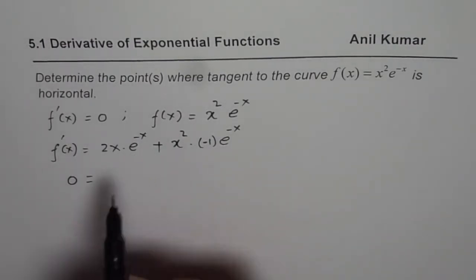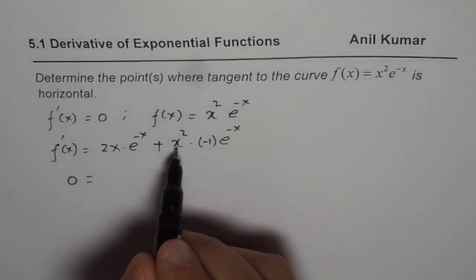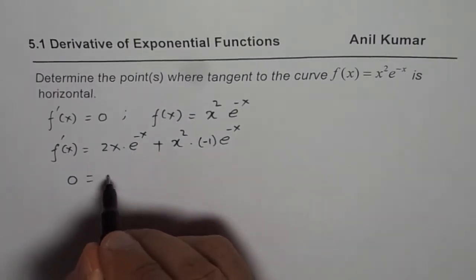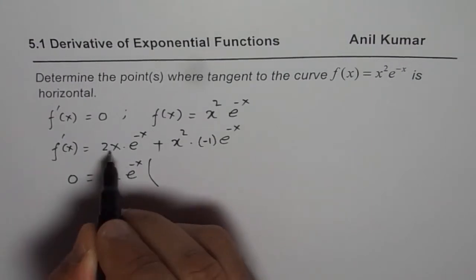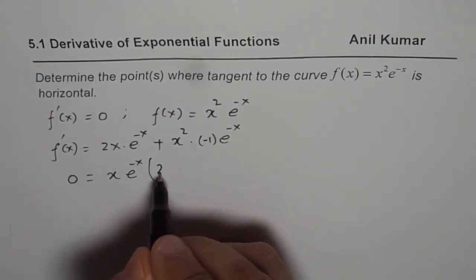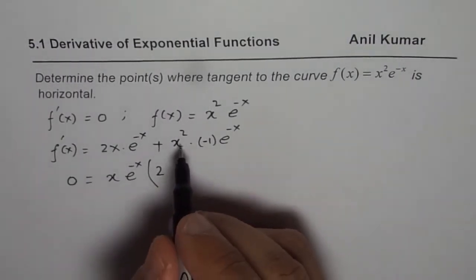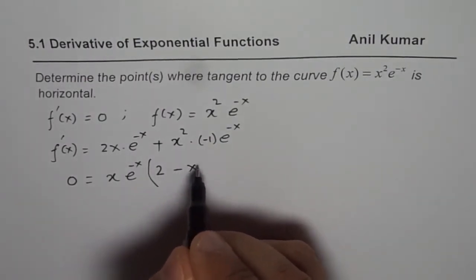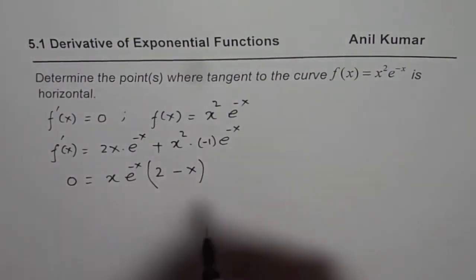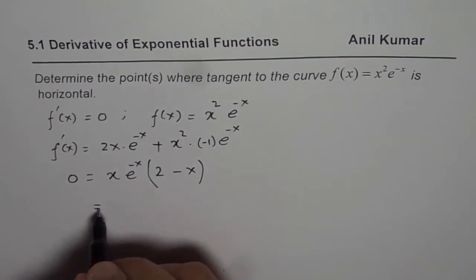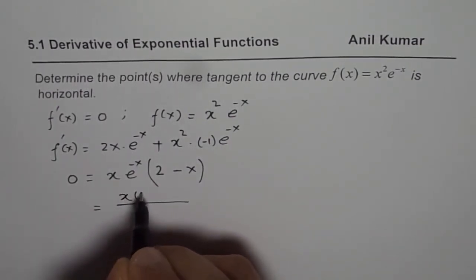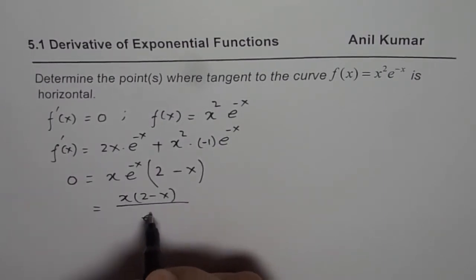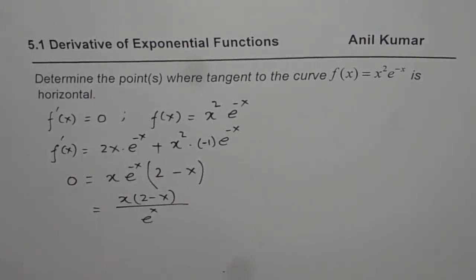So we can take x times e to the power of minus x as common. We are left with 2 from the first term and minus x from the second term. You could write this as x times 2 minus x divided by e to the power of x. So that is how we get our expression.